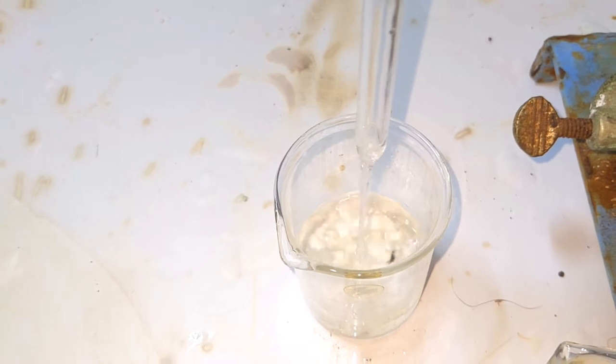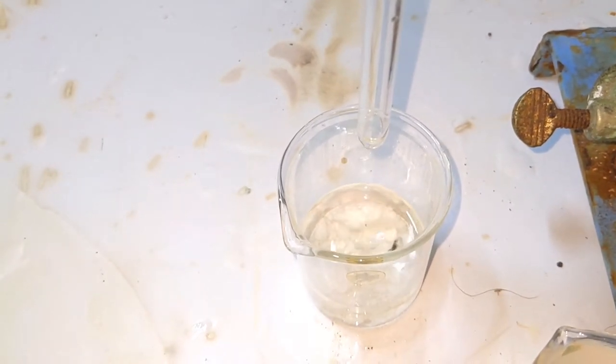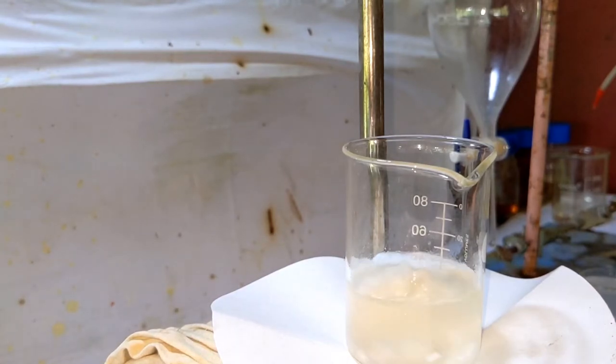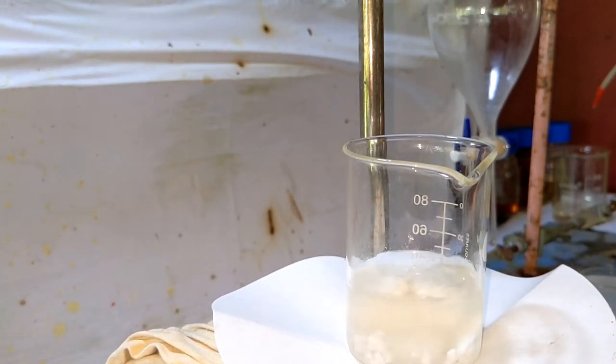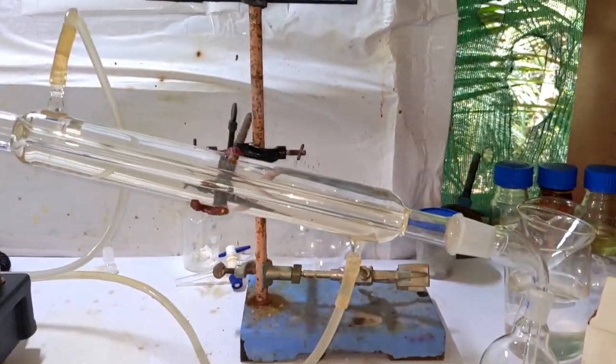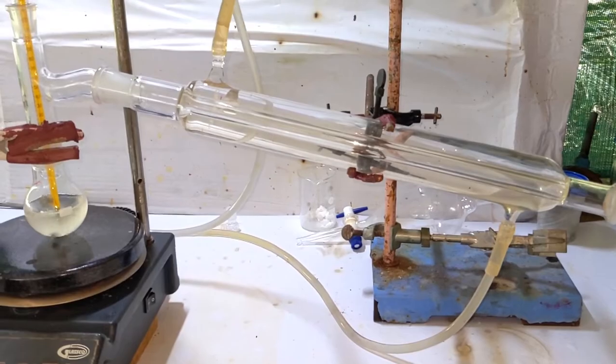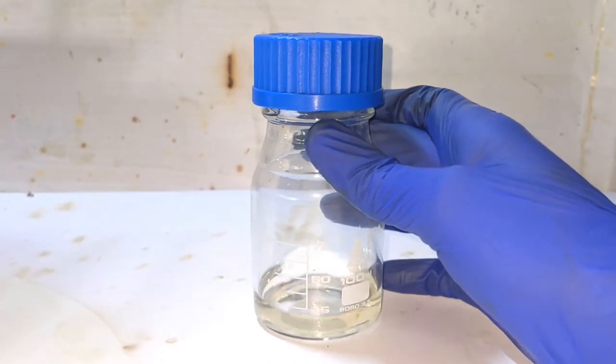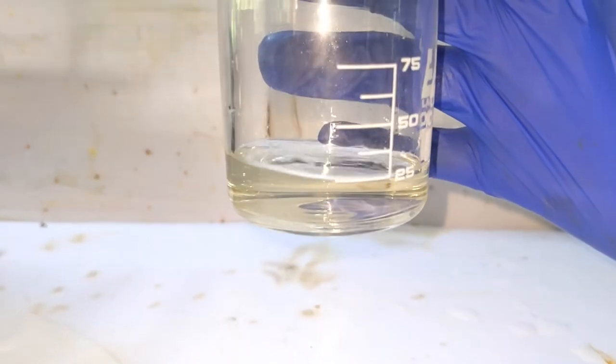Finally, the distillate, the organic layer, was poured into a beaker containing anhydrous calcium chloride, and a second distillation was conducted. Everything below 90 degrees Celsius was collected, and this is the final product. At the end, I collected 25 milliliters of the compound, which represents a 50% yield.